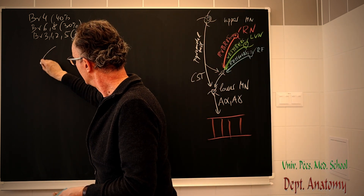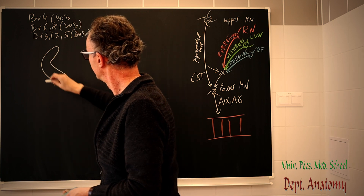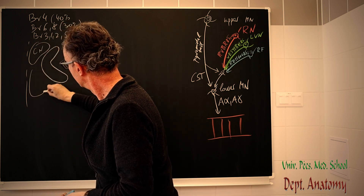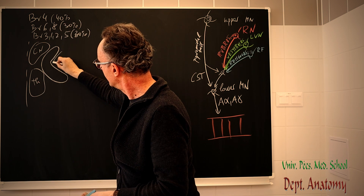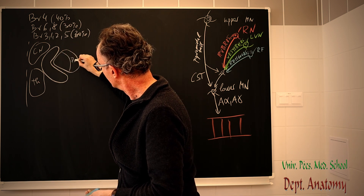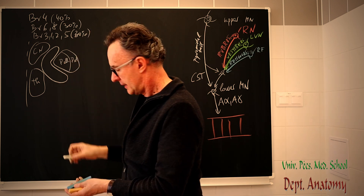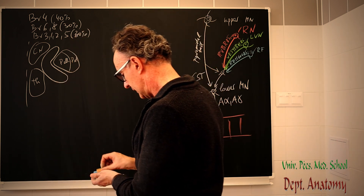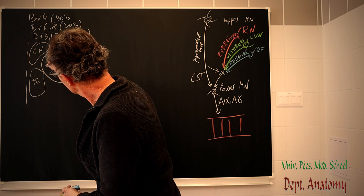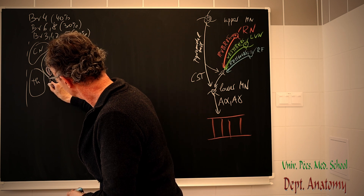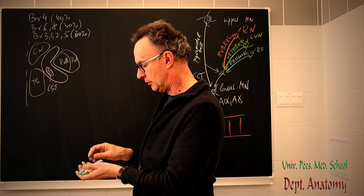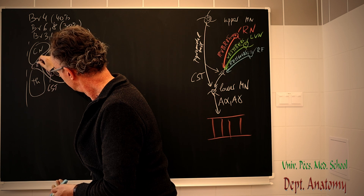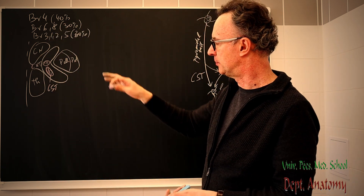You need to know the exact location of the corticospinal and corticonuclear tract. In the internal capsule: the midline is here, the anterior limb is in front, the posterior limb is behind. In the genu we have the corticonuclear tract, and the corticospinal tract descends in the posterior limb, behind the genu. So these are the two parts of the pyramidal tract within the internal capsule.